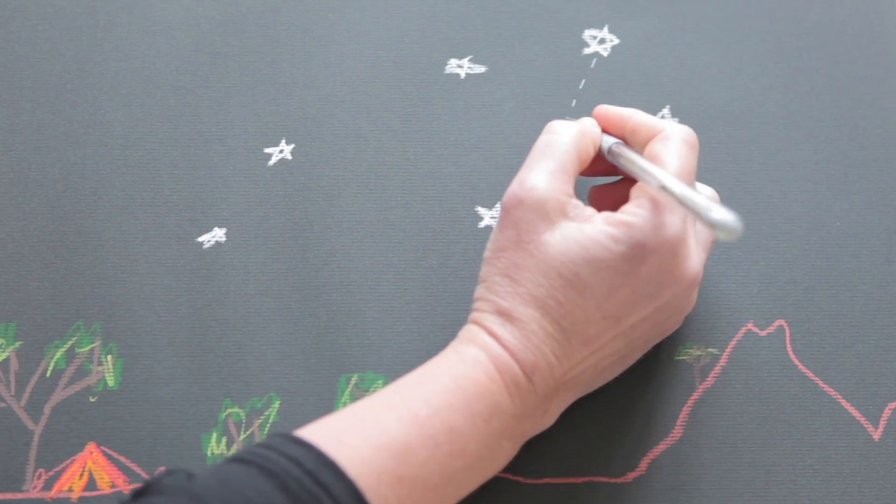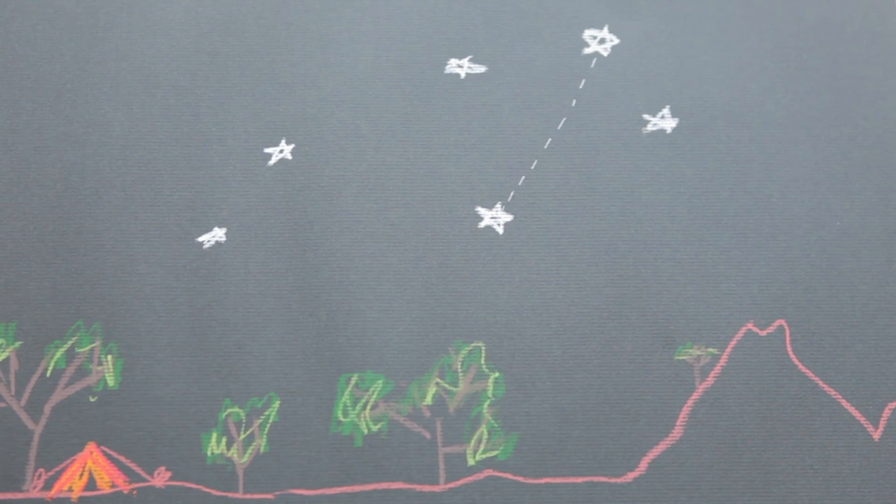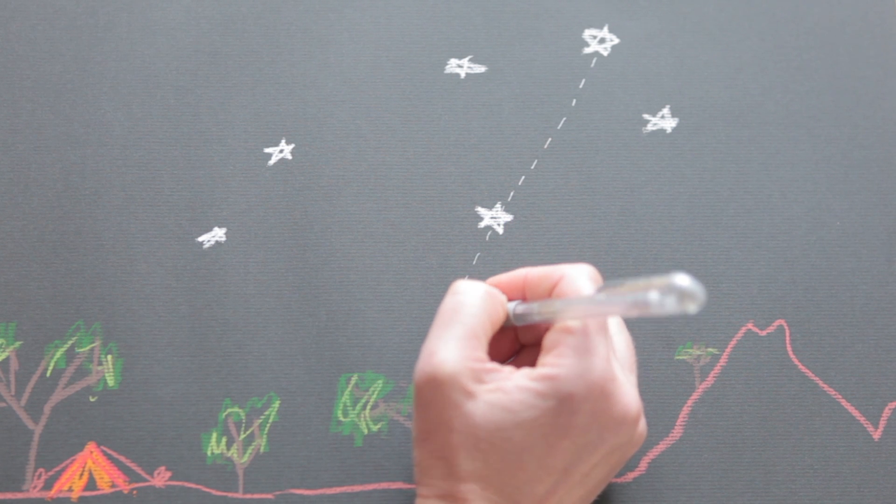Simply start by drawing an imaginary line all the way through the longest angle of the Southern Cross, from the top all the way to the ground.